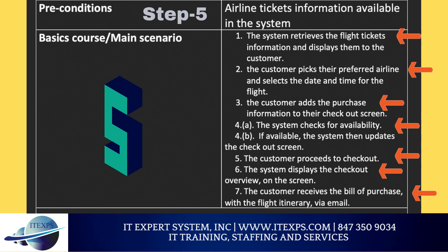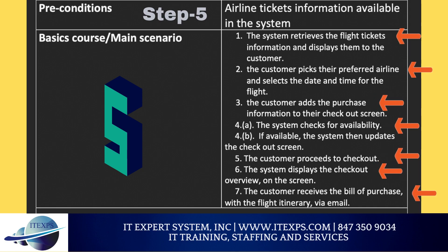Now we can begin with the basic scenario steps. The first main scenario: the system retrieves the flight tickets information and displays them to the customer. Following up, the customer picks their preferred airline and selects the date and time for the flight. Next, the customer adds the purchase information to their checkout screen. Then the system checks for availability. If available, the system updates the checkout screen. After that, the customer proceeds to checkout. Next, the system displays the checkout overview on the screen. And finally, the customer receives their bill of purchase along with the flight itinerary through email.